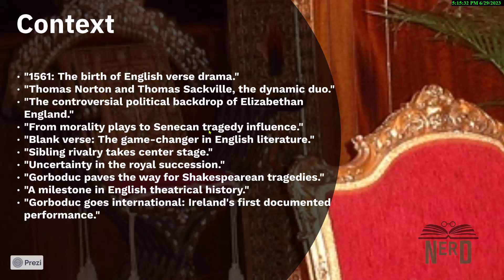The play got published for the first time in 1565 by a bookseller named William Griffith, and then the authors released an updated version in 1570, which was printed by John Day and called The Tragedy of Ferex and Porex. A third edition came out in 1590 by Edward Alday.